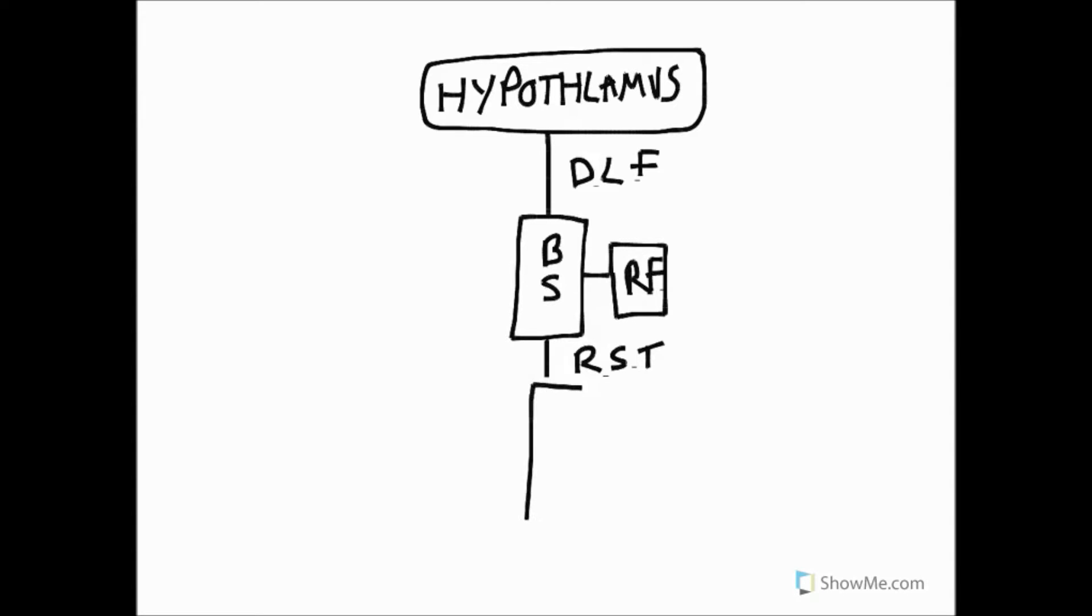And from there the reticulospinal tract carries sympathetic nerve fibers down to the spinal cord. We're going to represent the spinal cord here. We have fibers coming from T1 all the way down to L2, and that's where we'd expect to see cell bodies of sympathetic neurons inside the spinal cord.